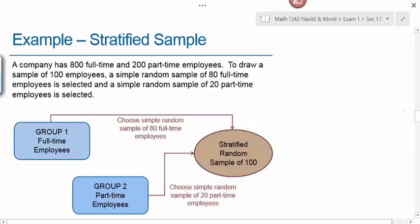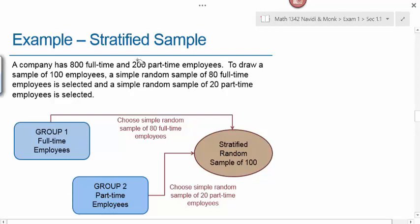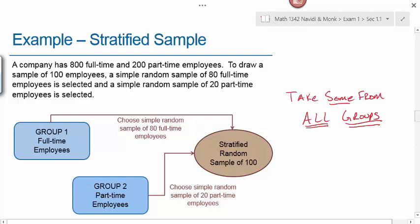Here's an example of stratified sampling. A company has 800 full-time and 200 part-time employees — 1,000 total. To draw a sample of 100 employees, a simple random sample of 80 full-time and 20 part-time employees is selected. Notice the 8-to-2 ratio of all employees is maintained in the sample — 80 to 20. The strata are full-time versus part-time employees, and we take some from each group to form our stratified random sample of 100.